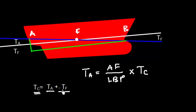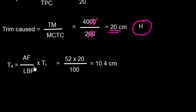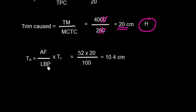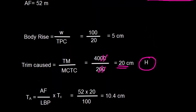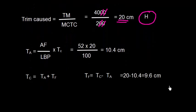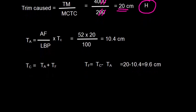Using this concept to split Tc: Ta = (AF / LBP) × Tc = (52 / 100) × 20 = 10.4 centimeters. Since Tc = Ta + Tf, Tf = Tc − Ta = 20 − 10.4 = 9.6 centimeters.